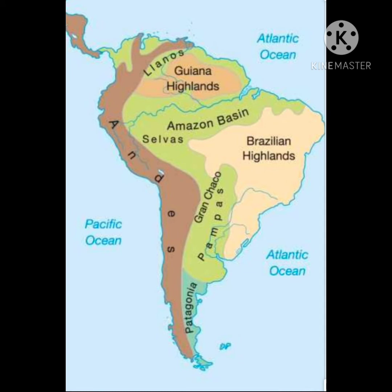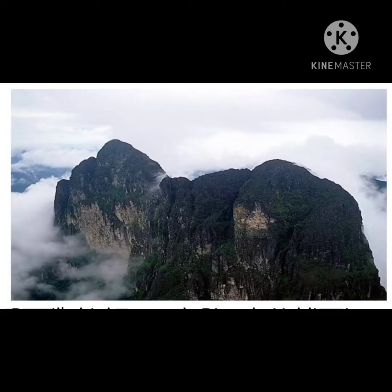These hills are formed due to dissection or erosion by tributaries of the Orinoco River in the Guiana highlands. Similarly, the Brazilian highlands are also dissected hills. The Brazilian highlands are higher than the Guiana highlands.